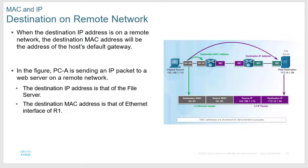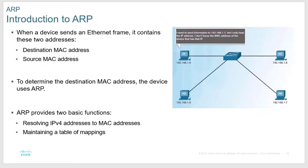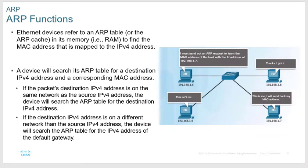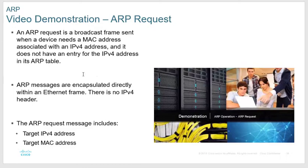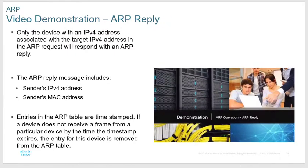ARP gives you two basic functions: it resolves an IP address to a MAC address, and it maintains a list of devices you've communicated with. The benefit is that if you talk to a file server and need to go back five minutes later, instead of broadcasting again, your PC just looks up the ARP table. When an address is removed from the ARP cache, you must send a broadcast or send to your default gateway. If it's in the ARP cache, you can send directly without a broadcast.